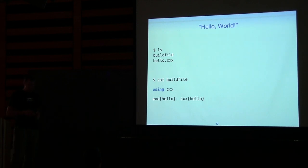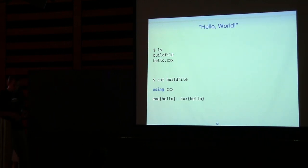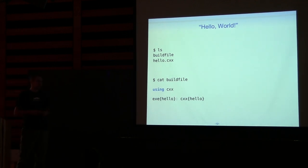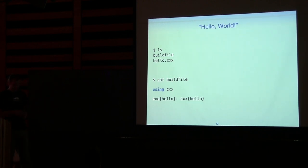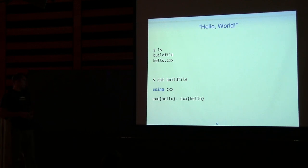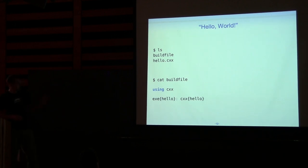So let's dive in — our first example, Hello World. Traditionally I'm not going to show the source file. Let me mention the name of this new build system. The old one I mentioned was called Build, so this one is called build2, as in 'build take two.' Similar to make files, we'll call the file a build file. This is the contents of our project: we have the source file and the build file. This is the contents of the build file — just two lines.